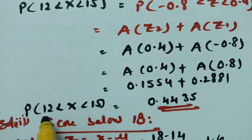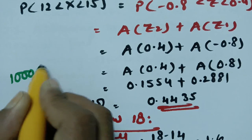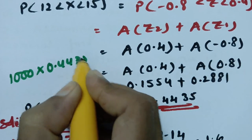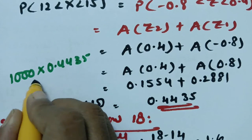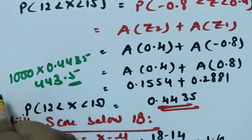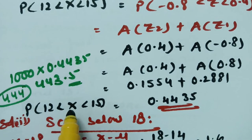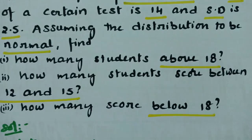For students scoring between 12 and 15: 1000 × 0.4435 = 443.5, so approximately 444 students scored between 12 and 15.